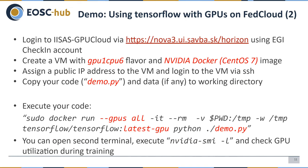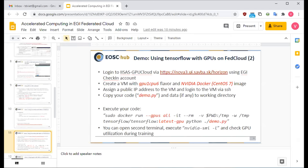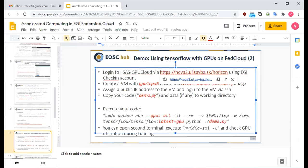Here's how we do it: first, I log into my site, I search for the GPU cloud via the provided link, then I create a GPU VM with the appropriate GPU flavor and Docker image, and then I execute the code on the VM using this command.